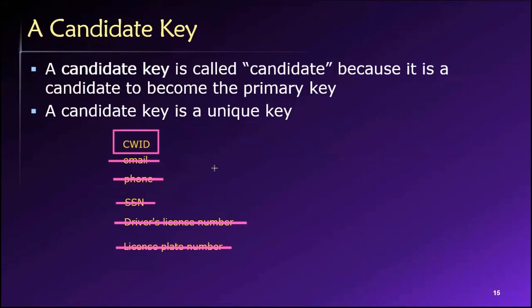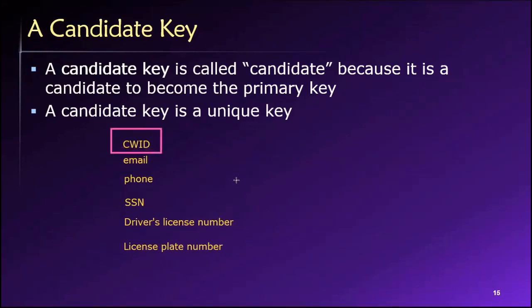The campus-wide ID is just a number invented for the purpose of uniquely identifying individuals related to the university — faculty, staff, administrators, students, whatever it may be. We've gone through the process of considering our various options and chosen from among these candidates the superior one, elevating it to the status of primary key. We will use the campus-wide ID as the basis for uniquely identifying everyone at the university.